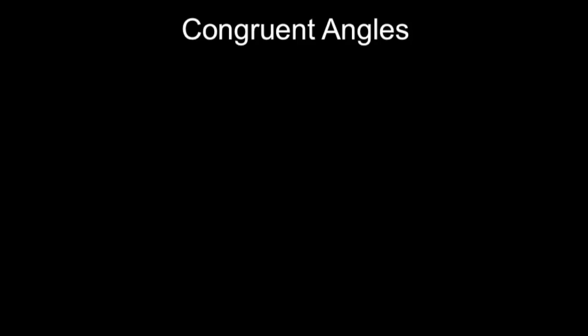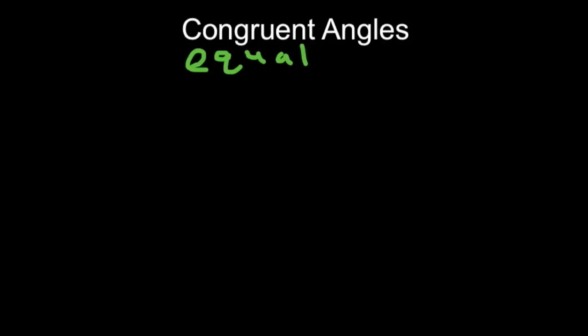Congruent means equal or same measure. So congruent angles are angles that are going to be exactly the same size. They have the same measure. So if you have two angles that are 30 degrees, then you would say they're equal or congruent.